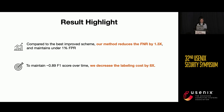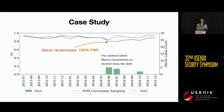Here are some highlight result numbers. We compare against the best possible baseline, using our new ideas to improve previous schemes as much as possible. Even so, our method still reduces the false negative rate by 1.3 times while maintaining under 1% false positive rate. In terms of analysis bandwidth, if we care about maintaining a steady F1 score over time, we can decrease the labeling cost by eight times. One reason for this is that when a new ransomware family causes an F1 score drop, our method quickly picks up the new family samples and labels them, allowing rapid recovery from the drift.